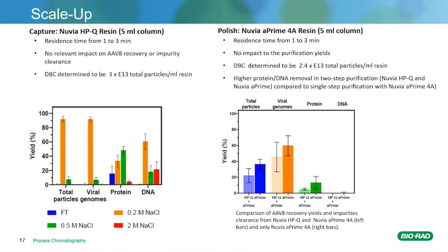Now I'm showing the results of the scale-up. In these situations, the columns are now 5 mL columns. The residence time was increased from 1 to 3 minutes. This showed no relevant impact on AAV8 recovery or purity clearance. The DBC was determined to be 3×10¹³ total particles per mL for the HPQ. For the A'4A also, the residence time was increased from 1 to 3 minutes, and this did not impact purification yields. The DBC was determined to be 2.4×10¹³ total particles per mL. Higher protein and DNA removal was shown in the 2-step purification — Nuvia HPQ followed by Nuvia A'4A — compared to the single-step purification with Nuvia A'4A alone.